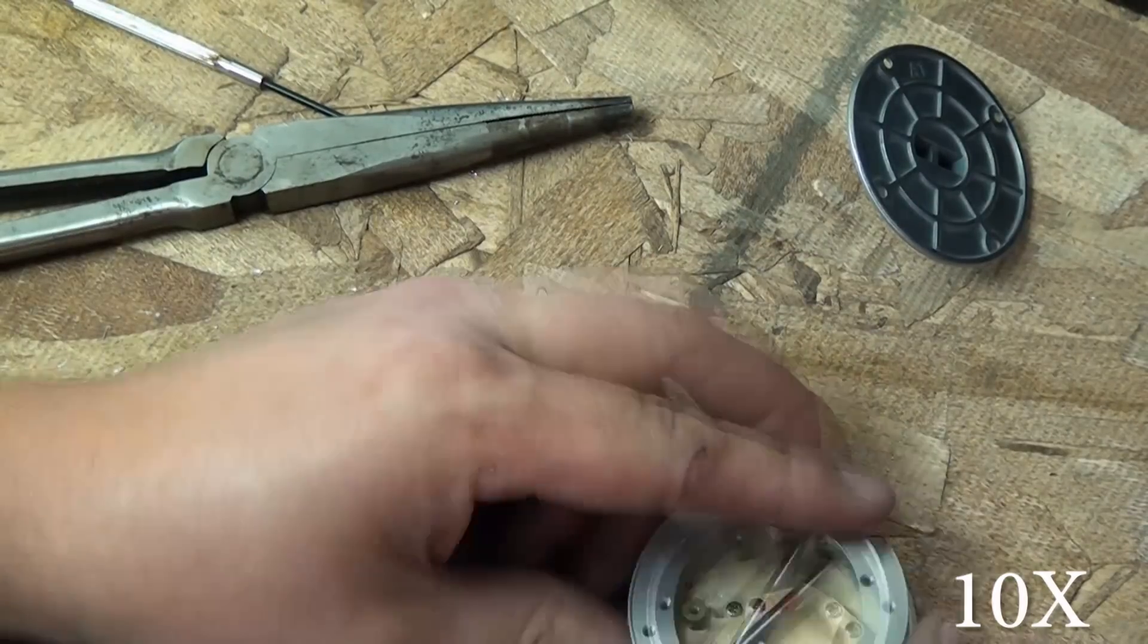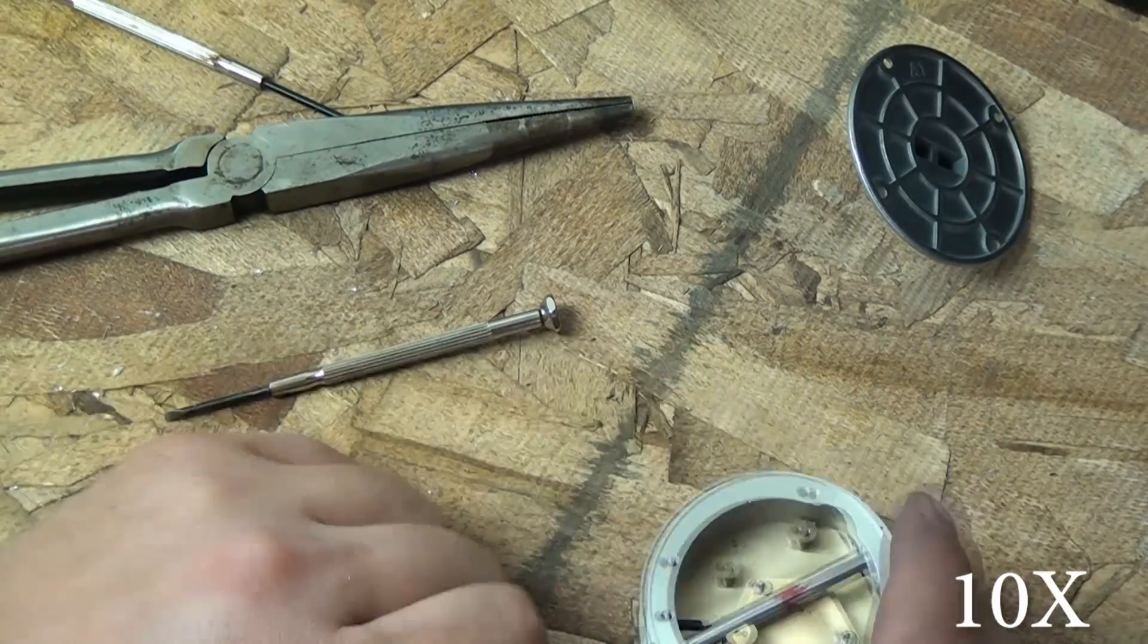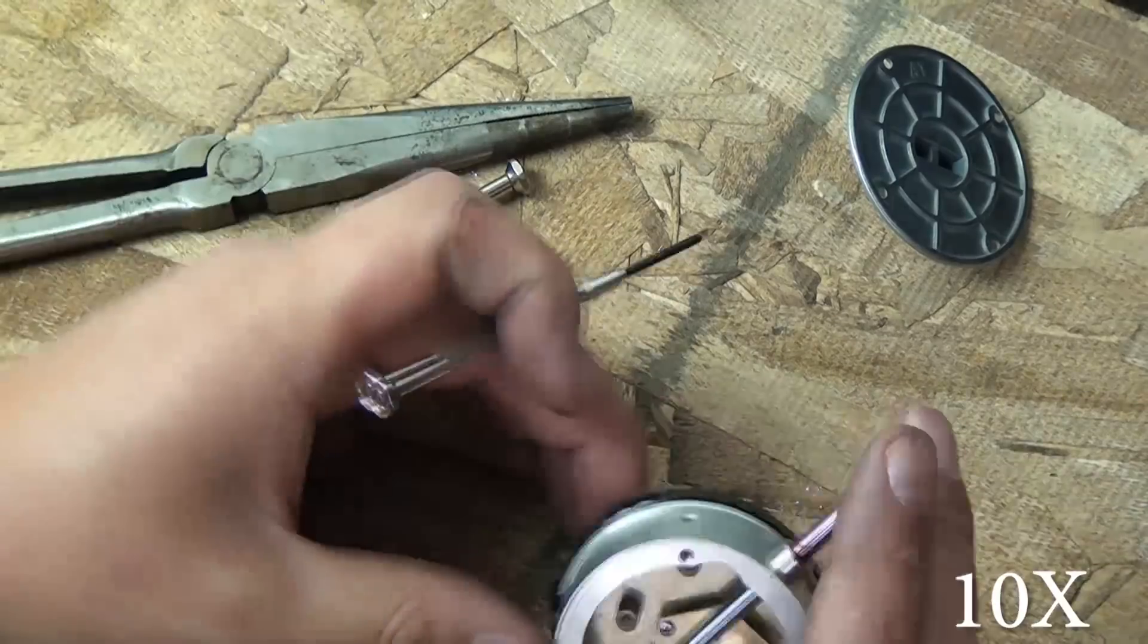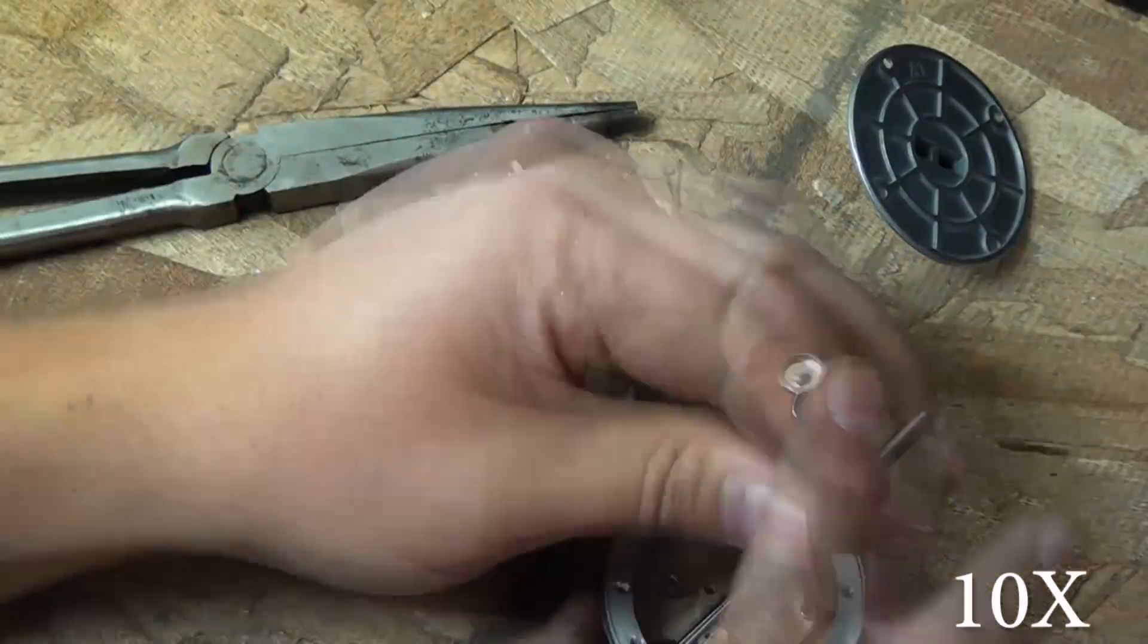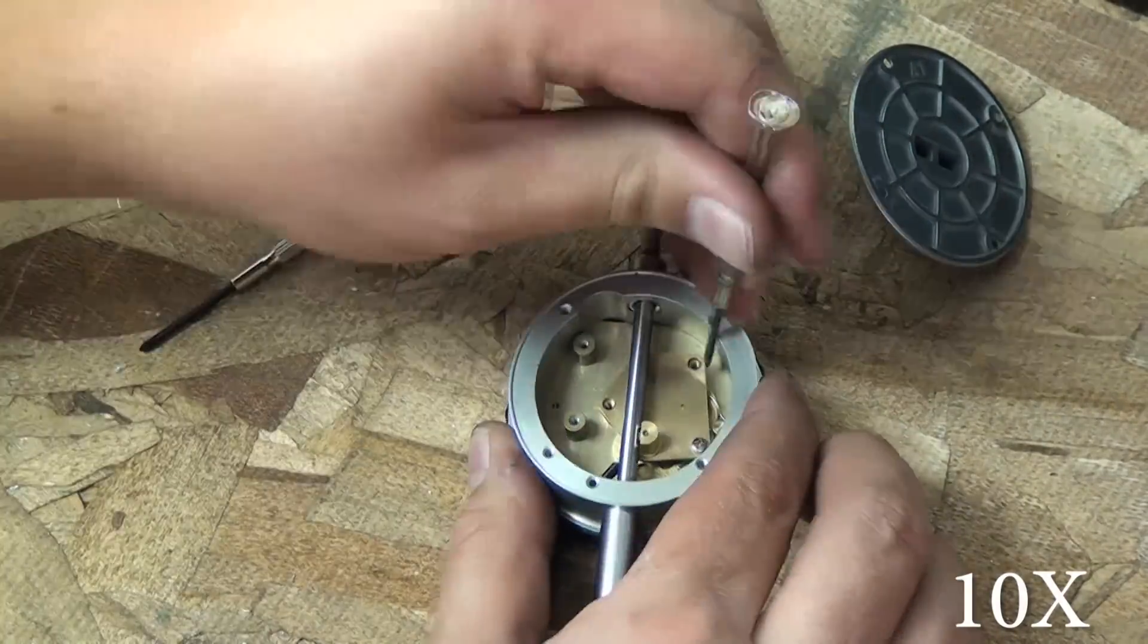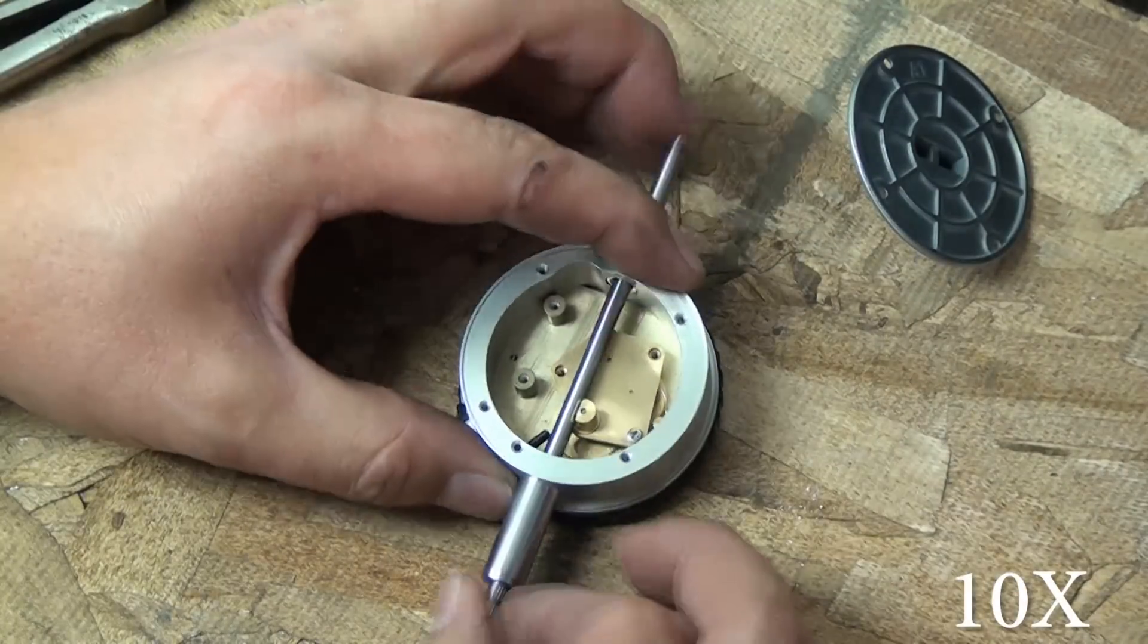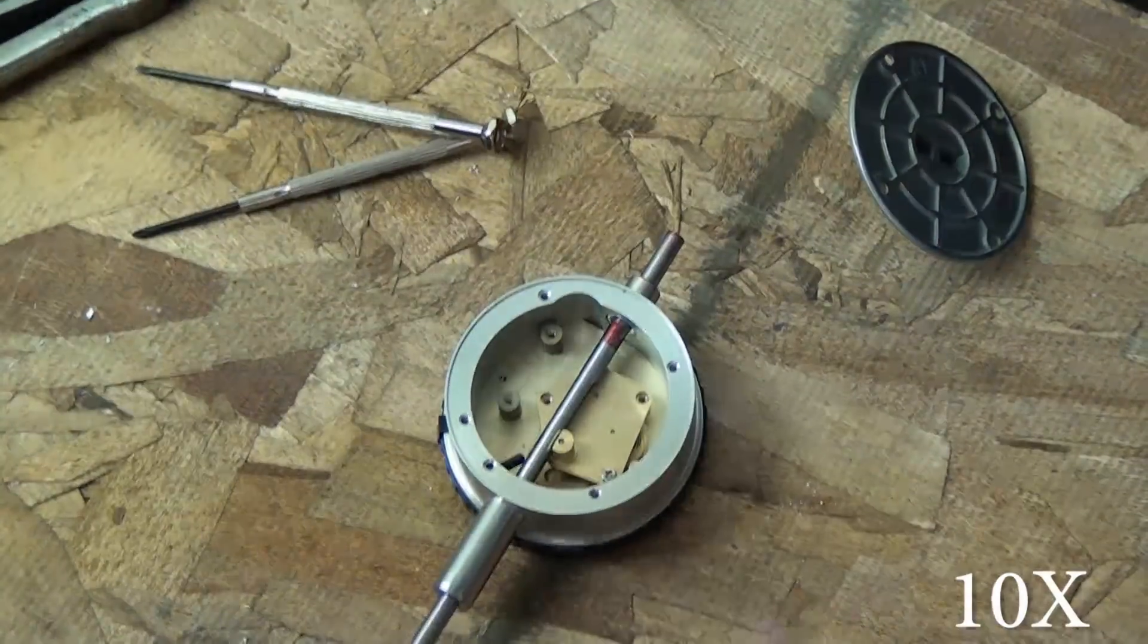I went ahead and pulled the back plate off and you can see that it's actually a little rack and pinion system. My next assumption was that the pinion was being forced too tightly up against the rack, and this ended up being what the problem was. I removed this little spring and the spring pin.